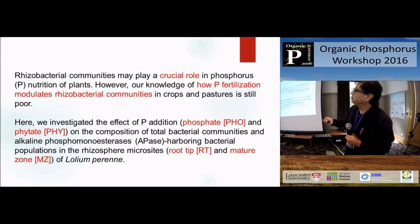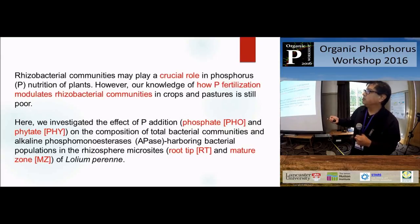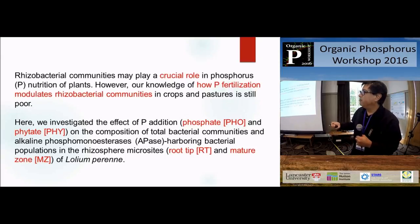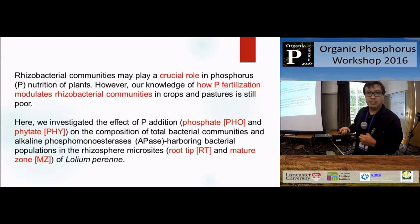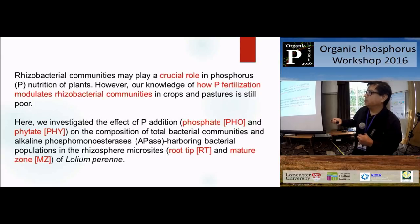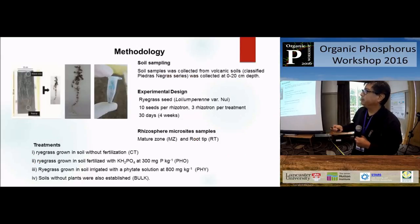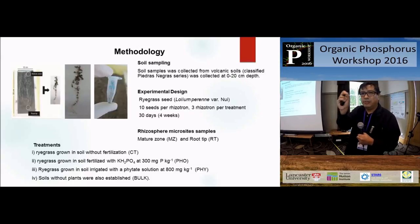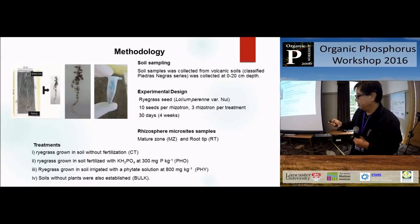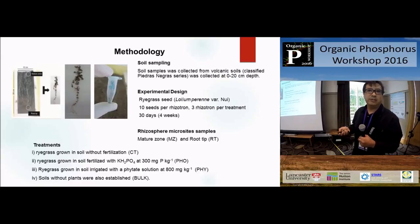In this study, we know bacteria has a crucial role in phosphoric nutrition of the plant. But we don't know what happens when we add phosphoric fertilization. We focus on phosphate addition and phytate. We check the total bacteria with the 16S gene, the popular gene, and we also use alkaline phosphatase bacterial community - in root tip and mature zone. We prepared a model system - a rhizotron - to sample very specific areas. We use volcanic soil from southern Chile, which has a lot of total phosphorus but low availability for plant nutrition.